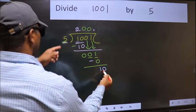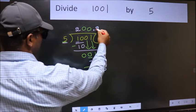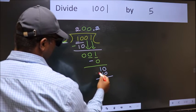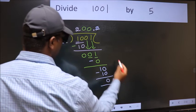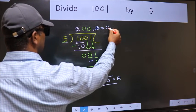So now we can put dot and take 0. So 10, when do we get 10 in 5 table? 5 times 2 is 10. Now we should subtract, we get 0.